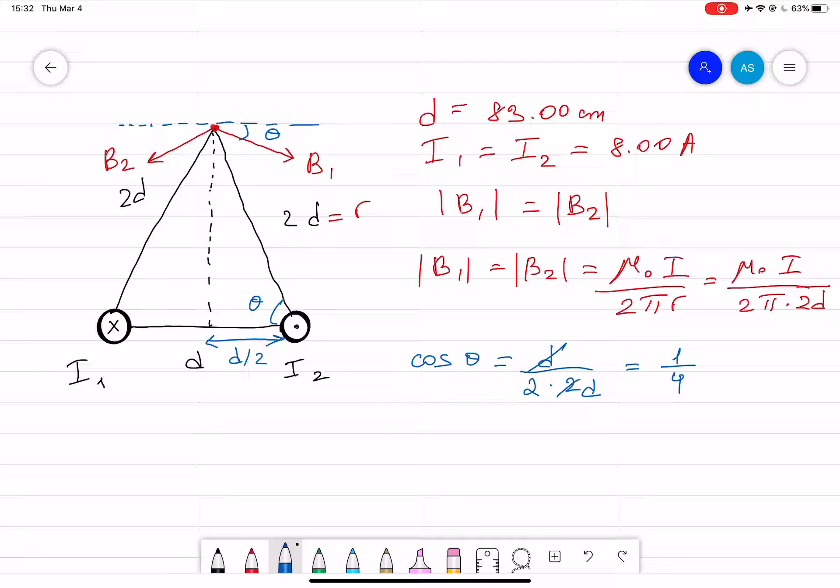The theta itself, inverse cosine of 1 over 4, will give us 75.5 degrees. If that one is 75.5 degrees, then you can also say that this theta is equal to 75.5 degrees.